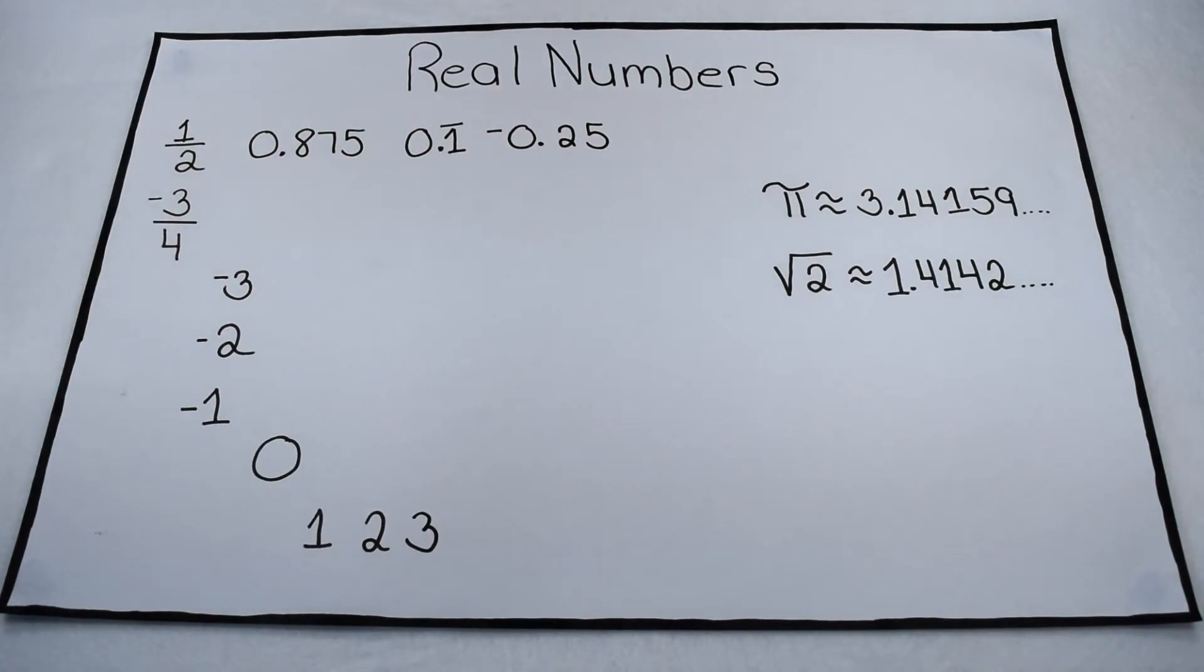Numbers can be classified into several different types based on their characteristics. Let's start with a set of all real numbers. Real numbers are those that can be represented by points on a number line and include positive and negative values. They include fractions and they include decimals.